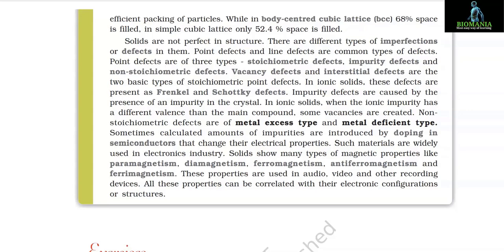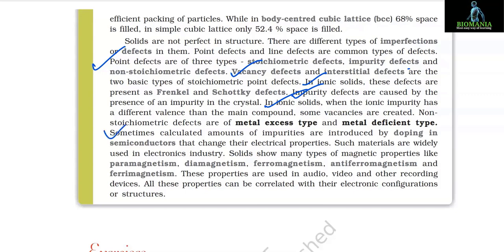Point defects are of three types: stoichiometric (vacancy and interstitial defects, appearing as Frenkel and Schottky defects in ionic solids), impurity defects (caused by ionic impurities with different valence creating vacancies), and non-stoichiometric defects (metal excess and metal deficiency types). Calculated amounts of impurities are introduced by doping in semiconductors to change their electrical properties — widely used in electronics. Solids show many types of magnetic properties — paramagnetism, diamagnetism, ferromagnetism, antiferromagnetism, and ferrimagnetism — which are used in audio, video, and other recording devices. All these properties can be correlated with electronic configurations or structure. Chapter completed.